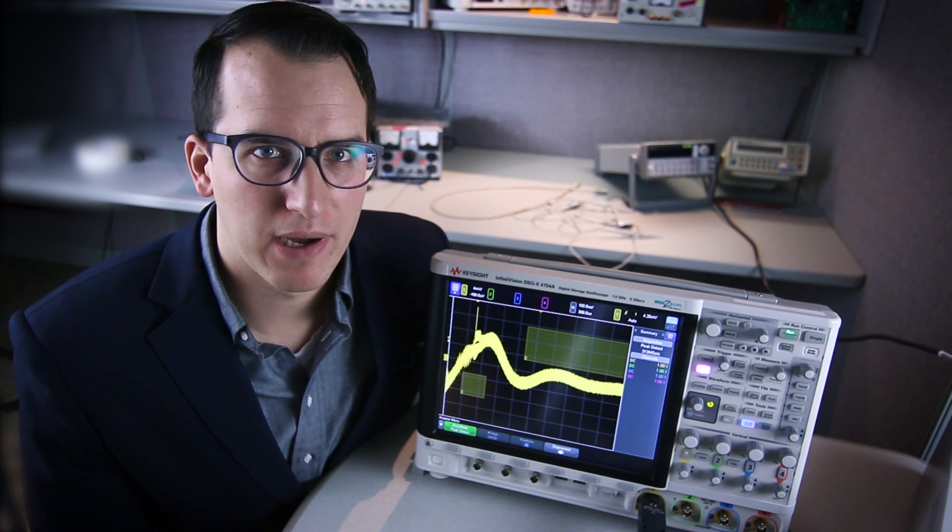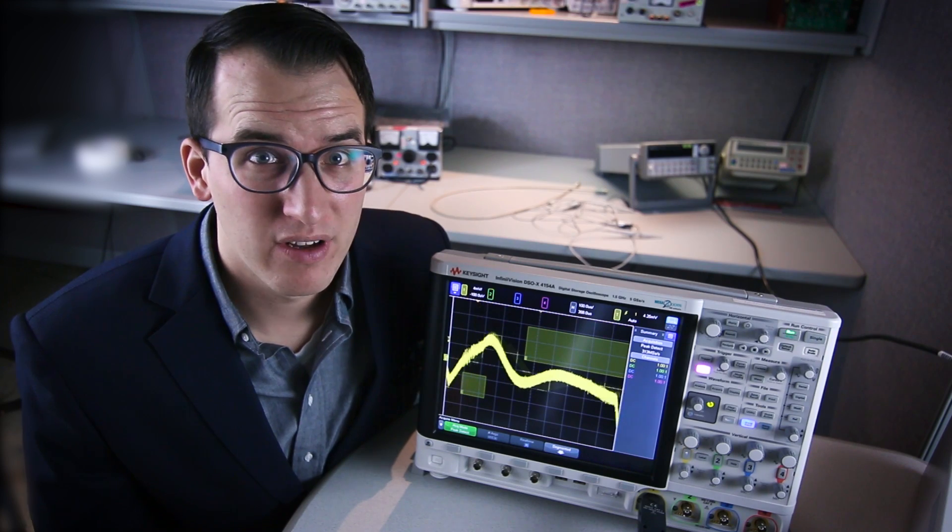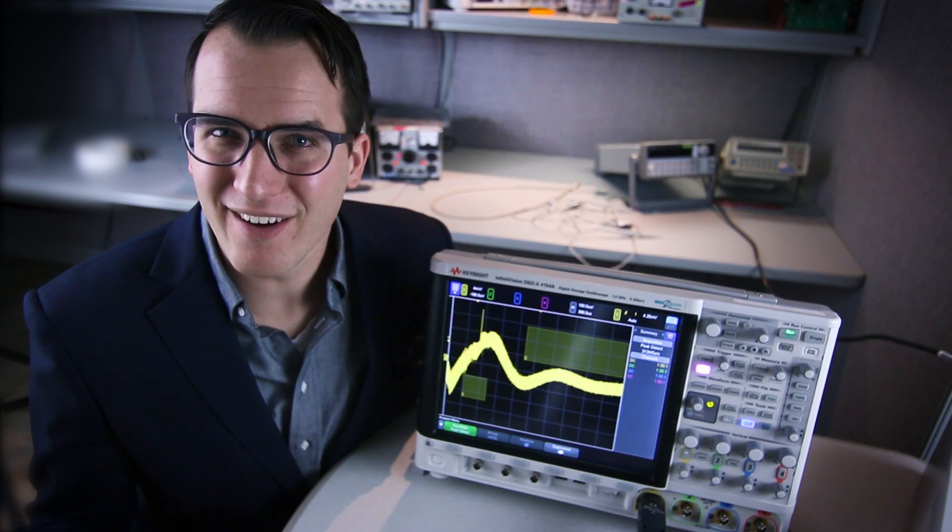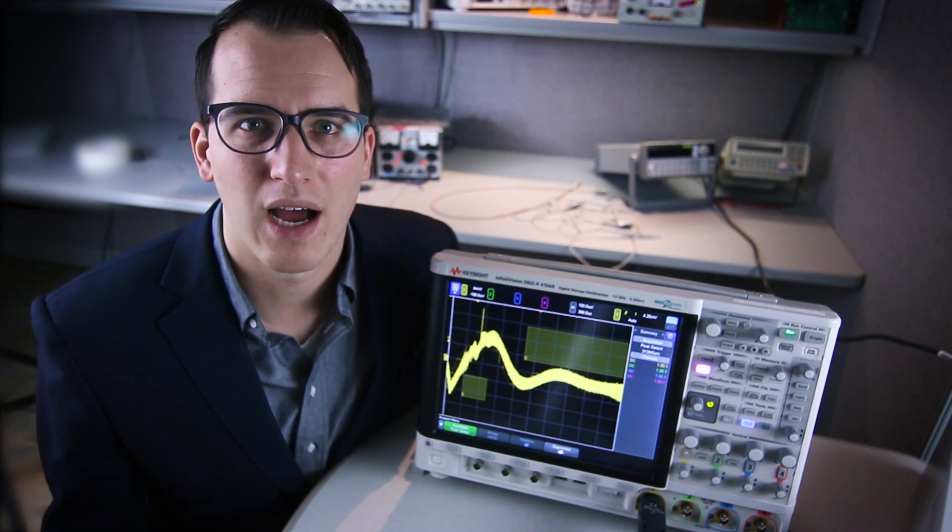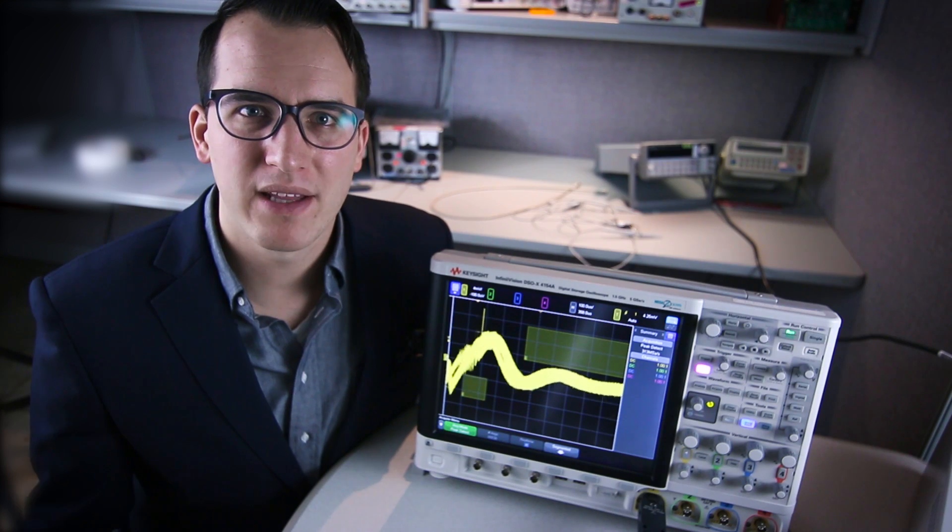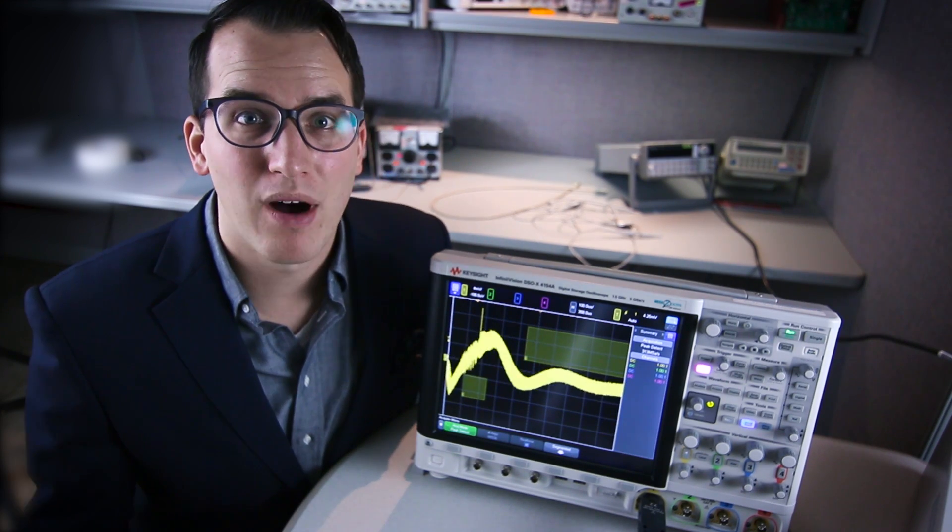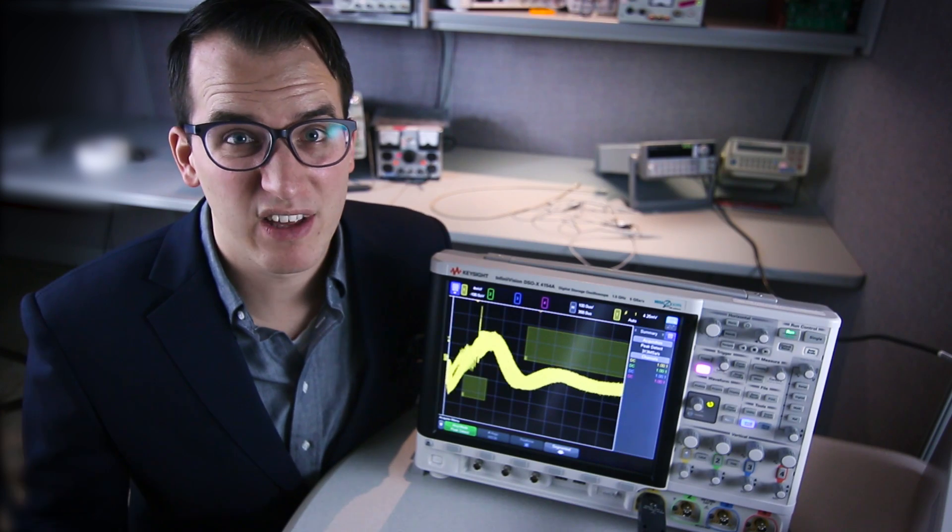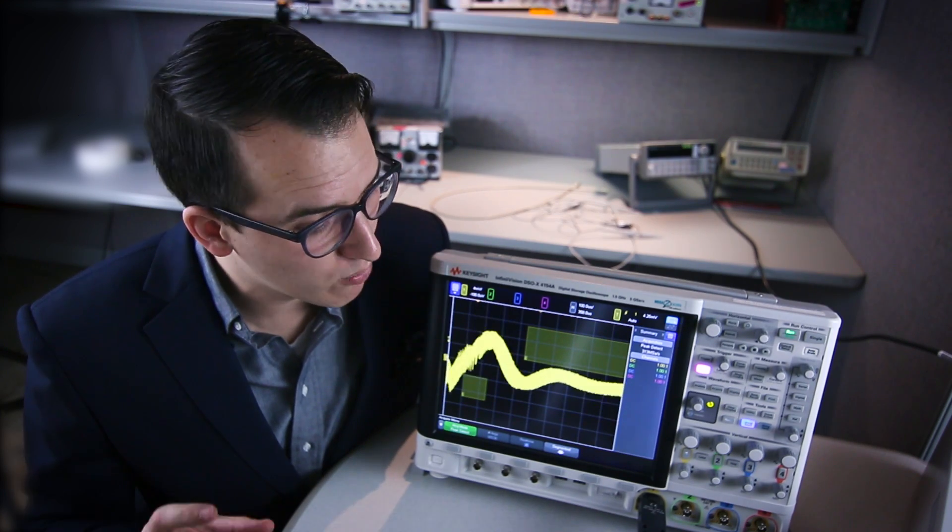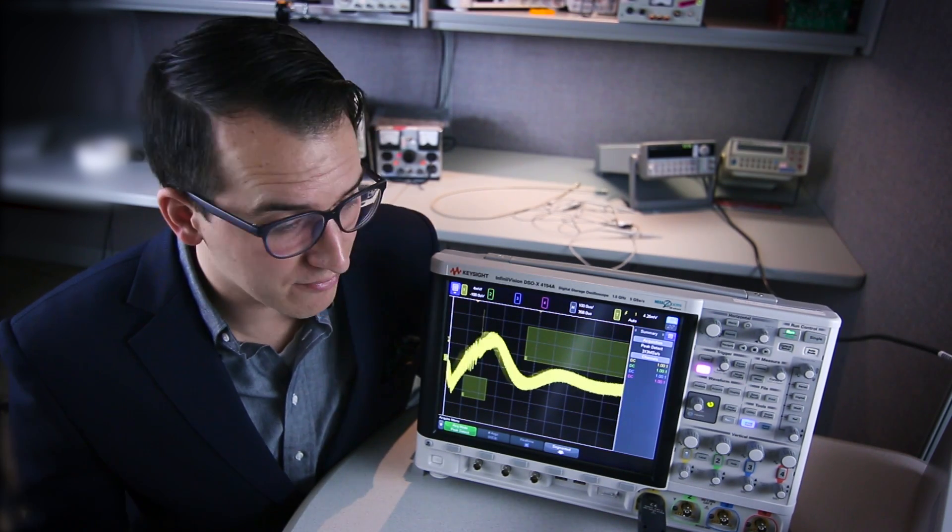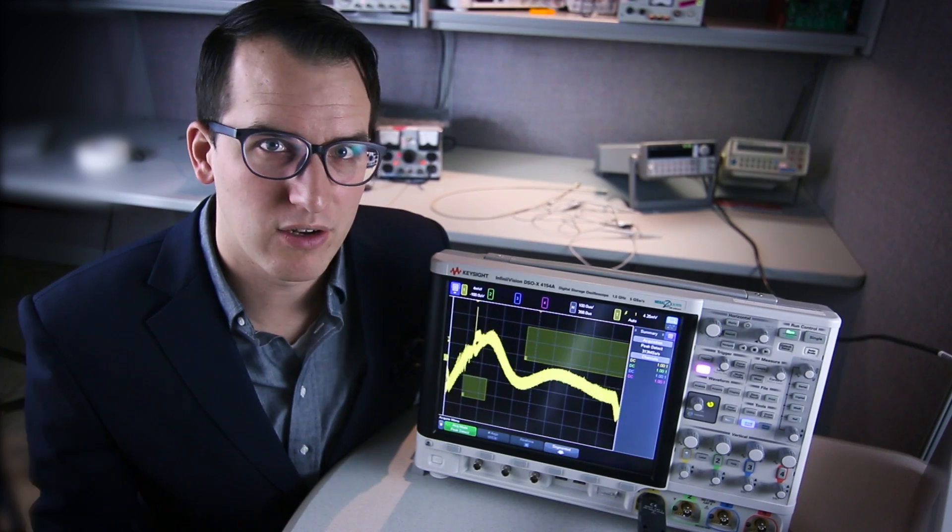On the opposite end of the spectrum we have peak detect mode. What peak detect mode does is we still oversample our signal like we did in high resolution mode, but instead we pick the largest and the smallest point per sample time interval and plot both of them. That way our signal is going to be much thicker and we can really see what noise is on our system. For example if you wanted to characterize the noise of this fan you could use peak detect mode.